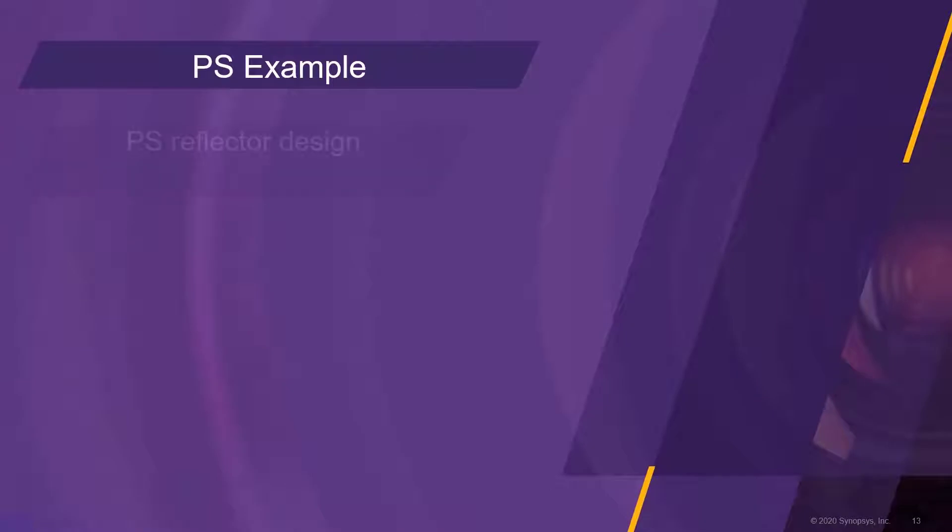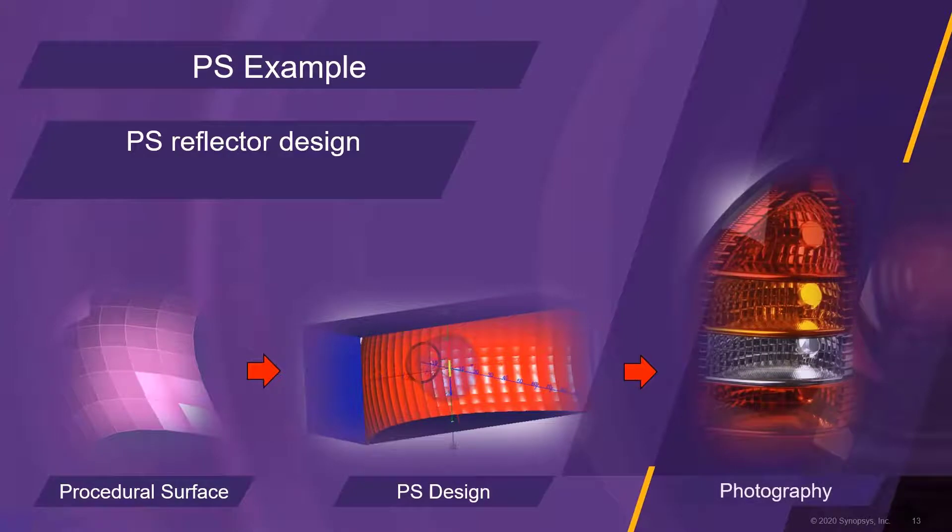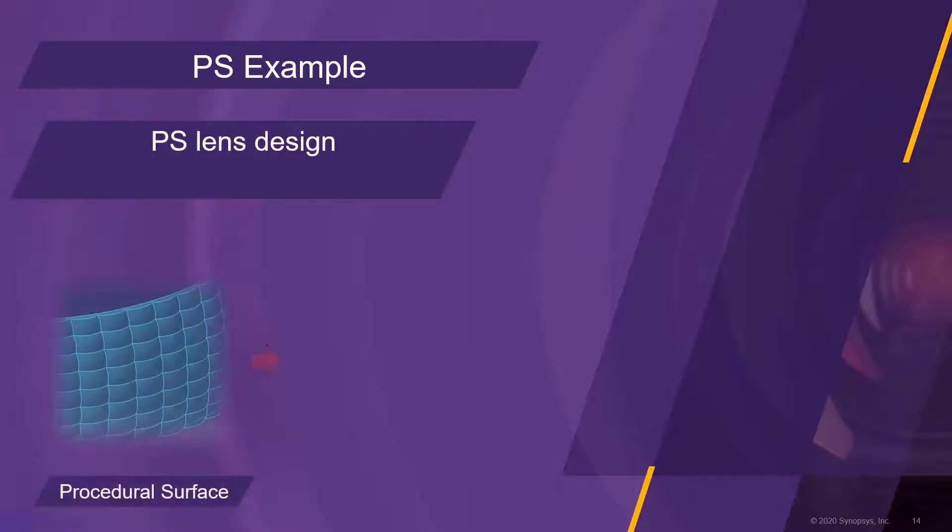The second example of a PS reflector design features a typical lighting fixture for a signal lamp. These types of faceted reflectors are quite common in automotive taillights. This example of a PS lens design shows a typical use case of a pillow lens optic in a signal lamp.